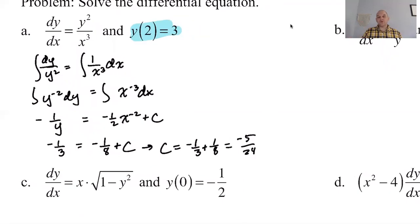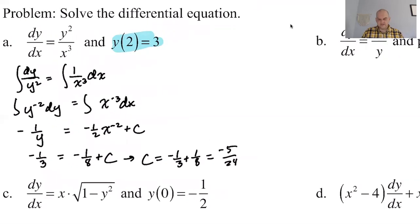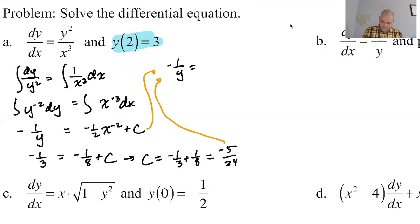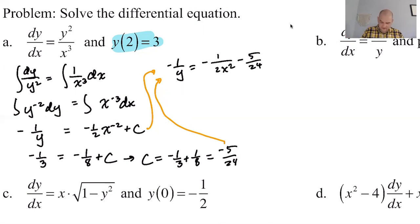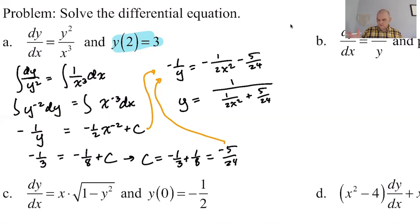We're making progress but we still need to solve for y. We combine terms: -1/y = -1/(2x²) - 5/24. Multiply through by negative 1, then take the reciprocal. I'll leave it somewhat messy. I think you could leave it in this form as a final answer, but let's get a common denominator to clean it up.